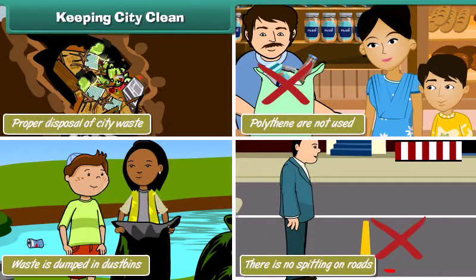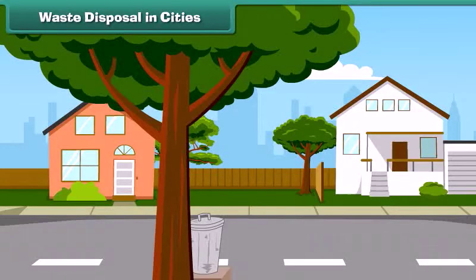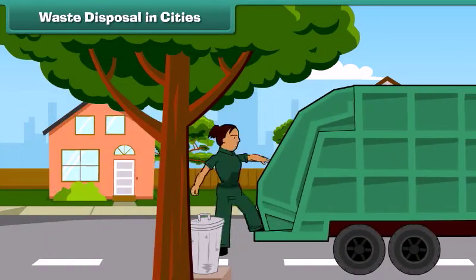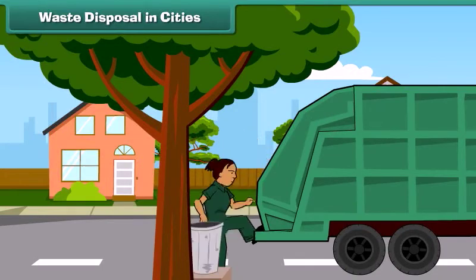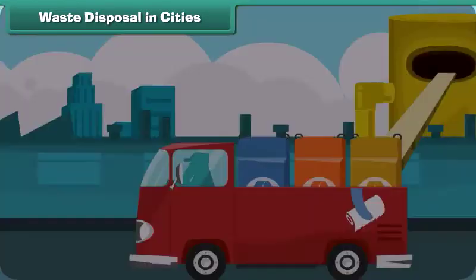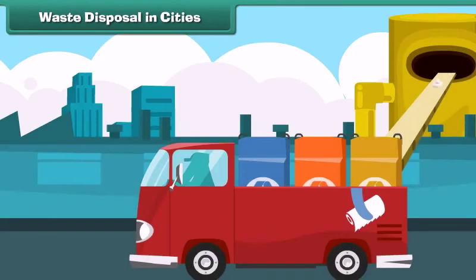Let us understand how waste is disposed of in cities. Waste from our homes is collected and treated in municipal sewage treatment plants, and only then disposed of into water bodies like rivers.